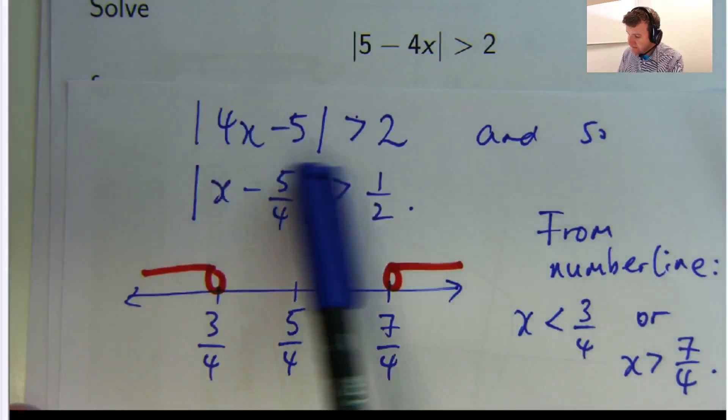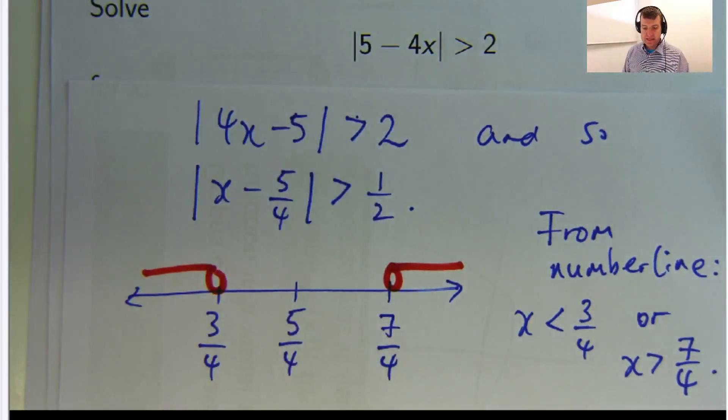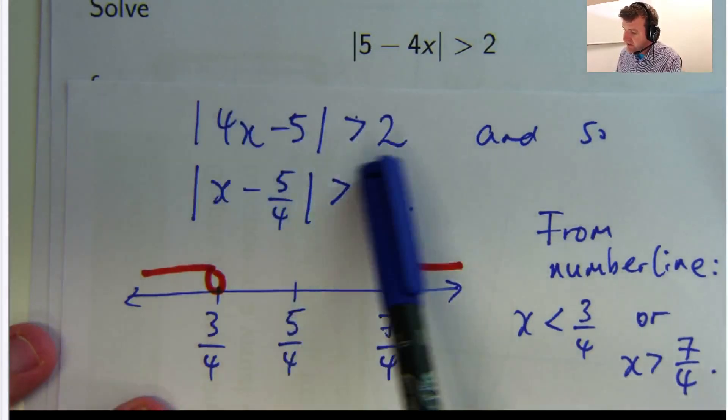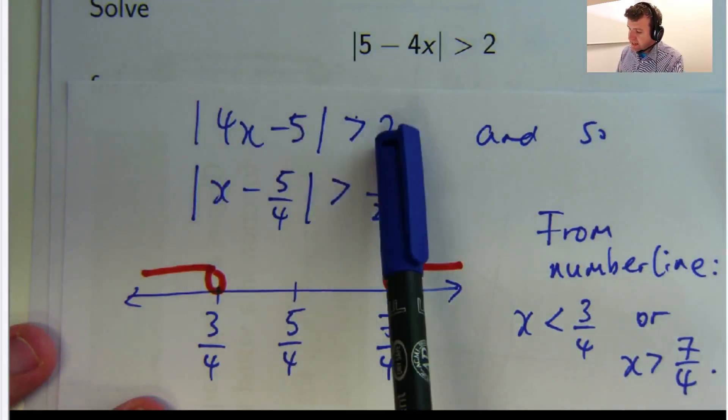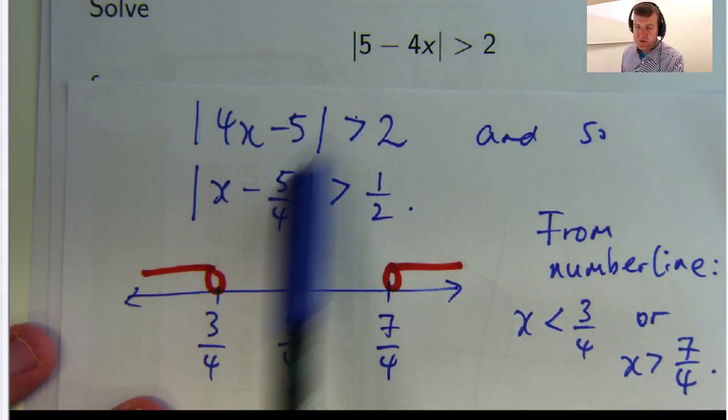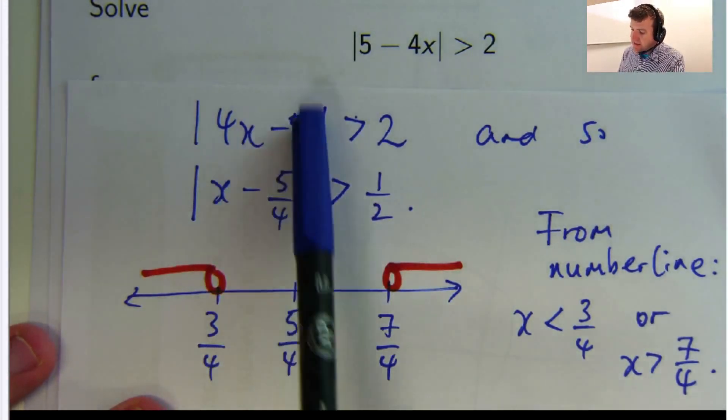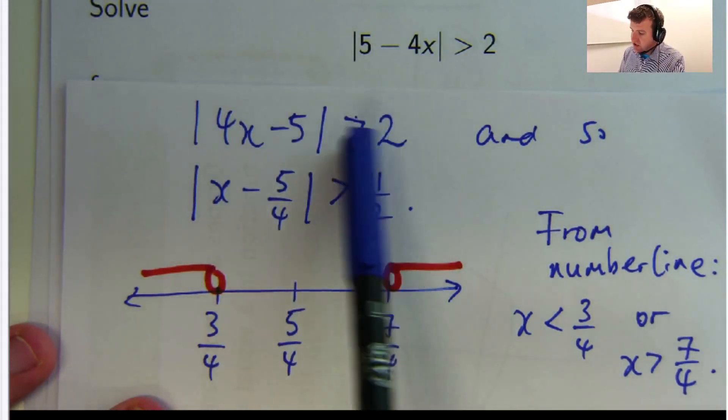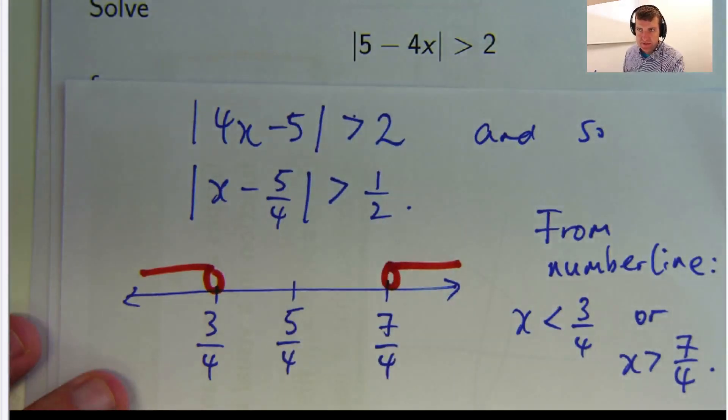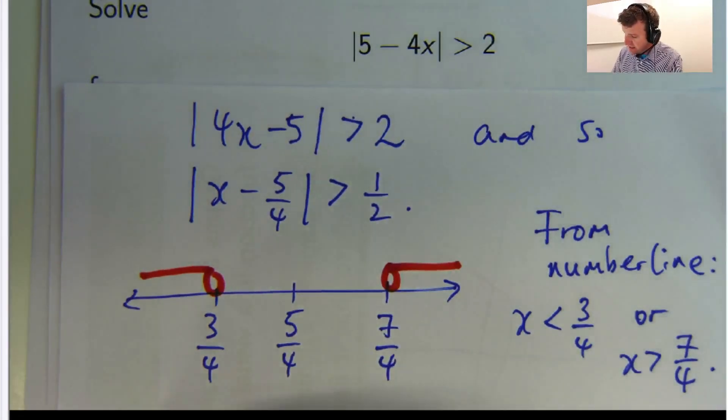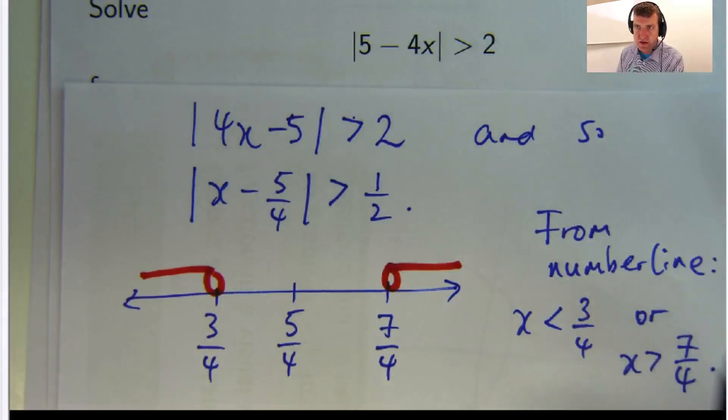now what about the algebraic way of doing it? Well, it's still good to do this for the algebraic way, but let's actually look at this. Basically what we do is we start with this, we write down exactly what's here without the absolute value signs. Then we write down the same thing and then change the two signs here. Okay, so that's the algebraic way of doing it. Let's look at the algebraic way of doing it.